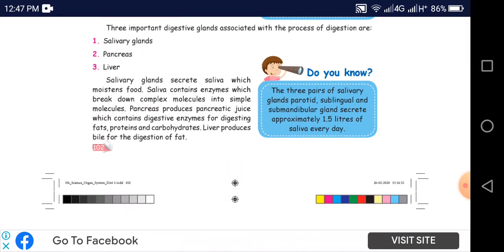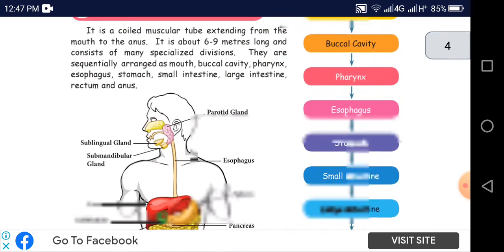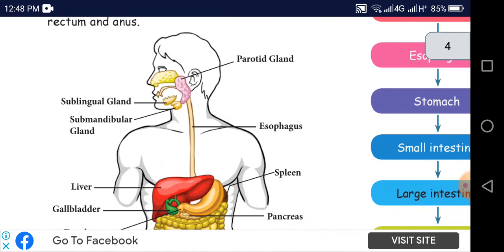The three parts of salivary gland are parotid, sublingual, and submandibular gland which secretes approximately 1.5 liters of saliva per day.